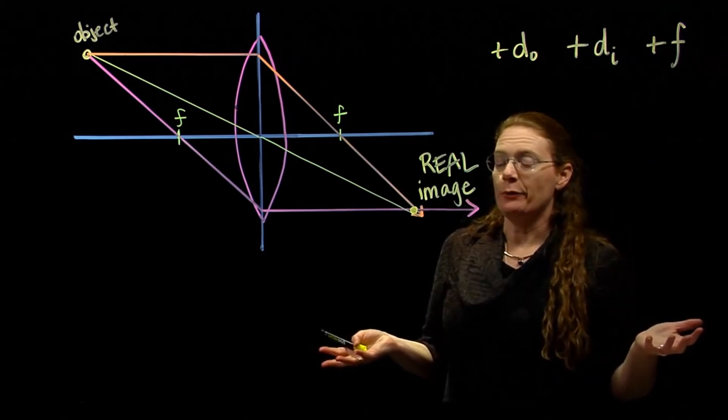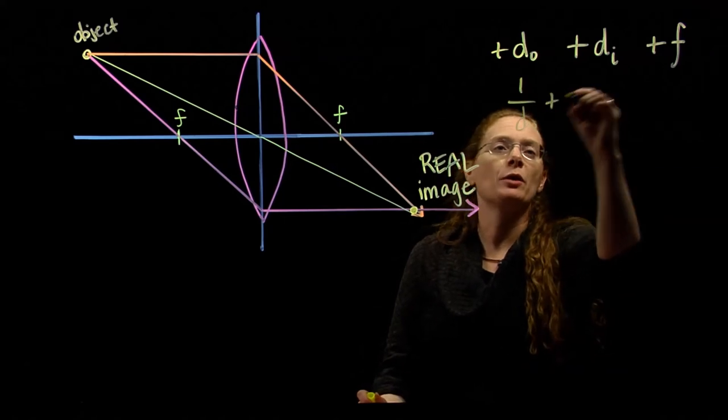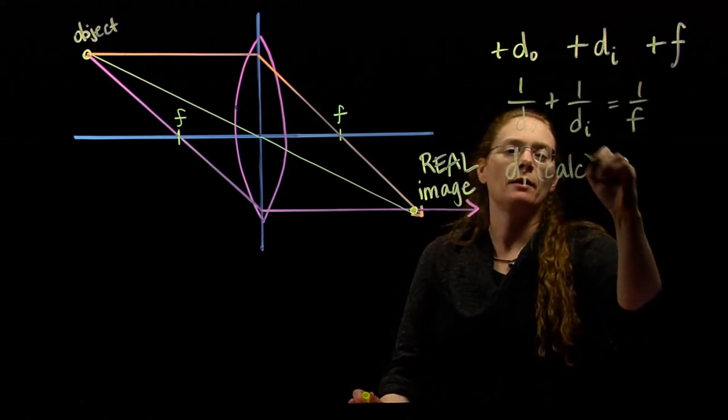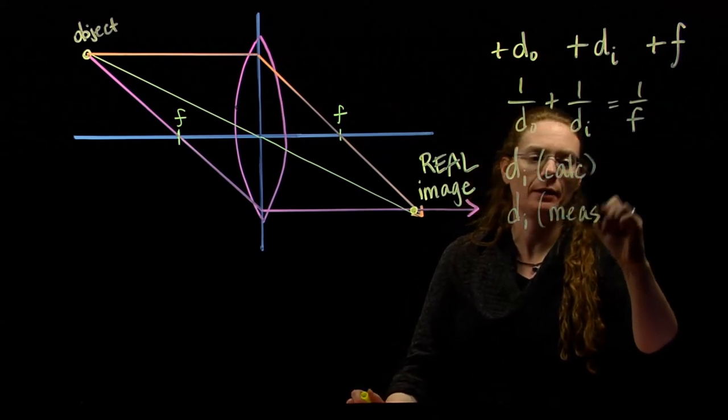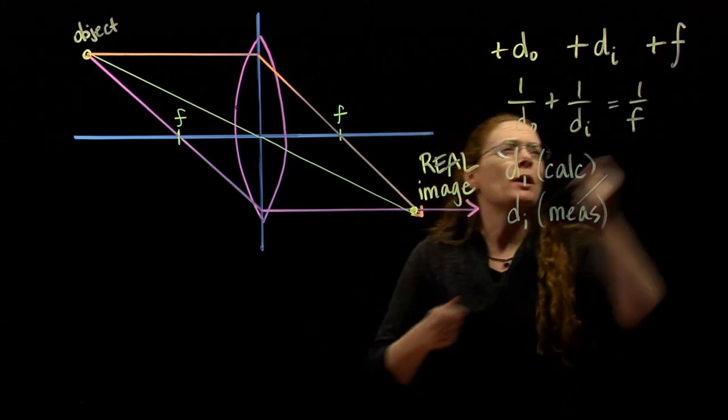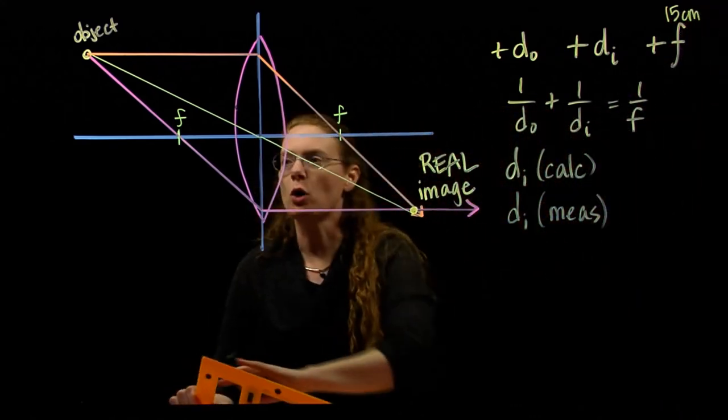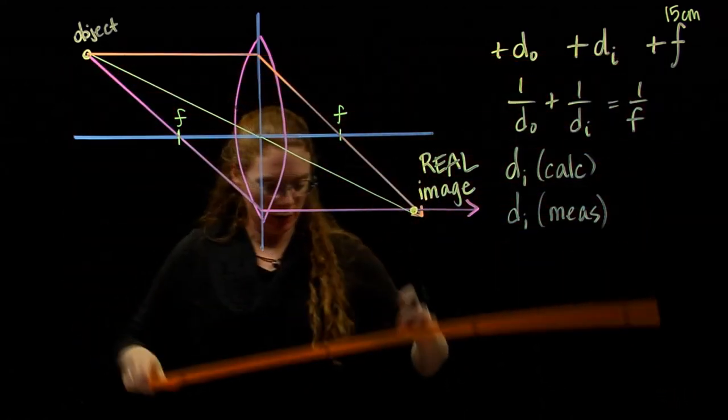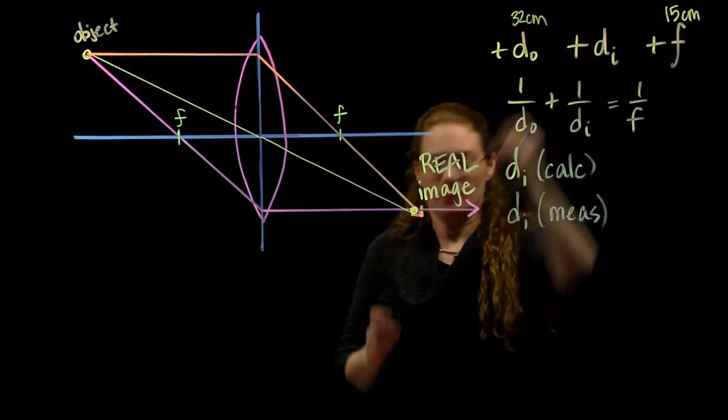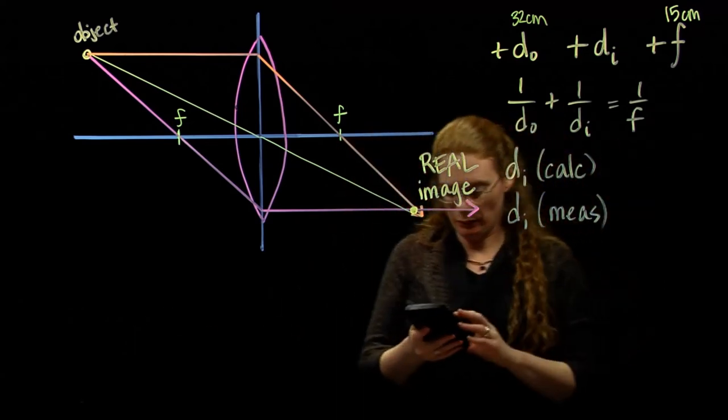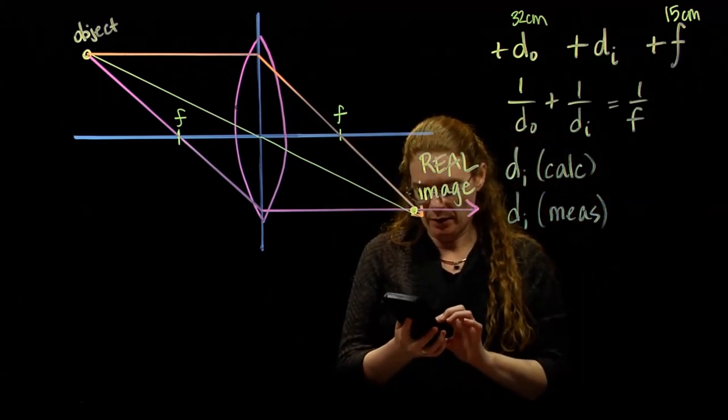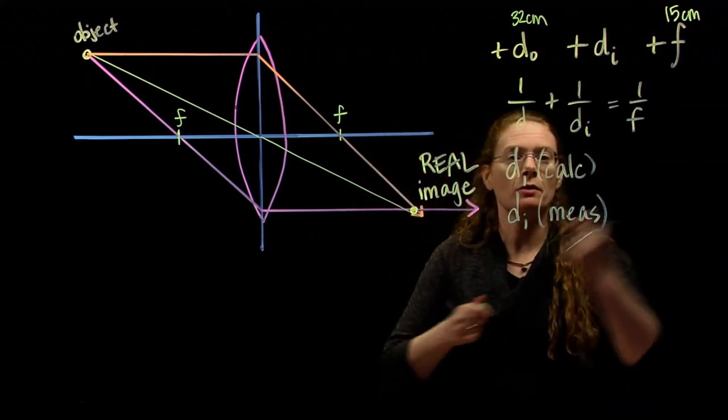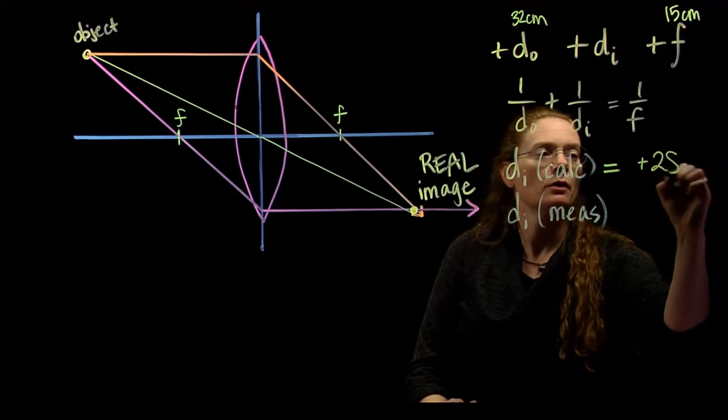We can do the exact same math that we had for mirrors. So I'm going to use 1 over DO plus 1 over DI equals 1 over F. And I'm going to calculate what my image distance should be, and then I'm going to measure it. Same thing we've been doing. Calculate it, measure it. My focal was 15 centimeters. My object distance is 32. So if we grab a calculator and use this formula, 1 divided by 1 divided by the focal minus 1 divided by DO, I get an image distance calculated of positive 28 centimeters.